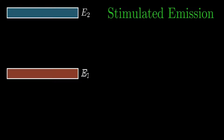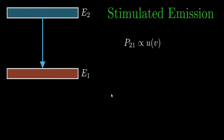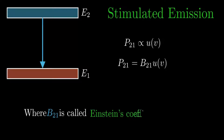Next is stimulated emission. In stimulated emission, when a photon of energy Hν is incident on an atom in excited state E2, the atom takes up that energy and returns to the ground state E1 by releasing two photons. The probable rate of transition P21 is directly proportional to U(ν), the incident energy density. Multiplying by constant B21, we get P21 = B21 × U(ν), where B21 is the Einstein coefficient of stimulated emission.